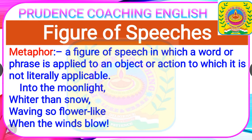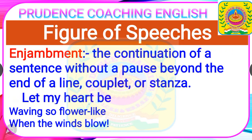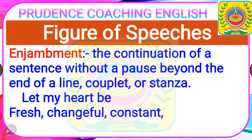Next is metaphor — a figure of speech where a word or phrase is applied to an object in a non-literally applicable way. For example, 'into the moonlight, whiter than snow, waving so flower-like when the winds blow.' Next is enjambment — the continuation of a sentence without a pause beyond the end of a line or stanza. Example: 'let my heart be' continues into the next line with 'changeful and constant,' with no punctuation mark separating them.